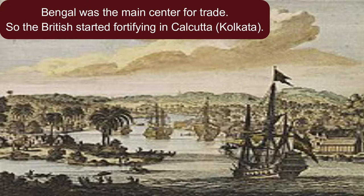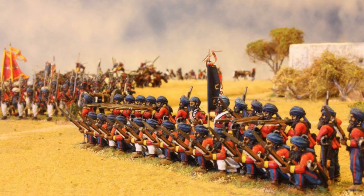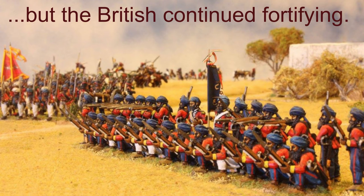At that time, Bengal was the main centre for trade, so the British started fortifying in Calcutta. Sirajuddaula, the Nawab of Bengal, got annoyed by this act of the British. So Sirajuddaula ordered a ban on the military exercises of the British in that region, but the British did not obey the Nawab and continued fortifying.